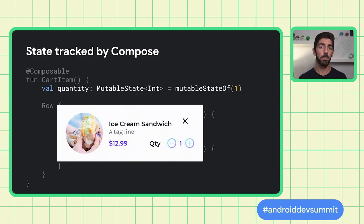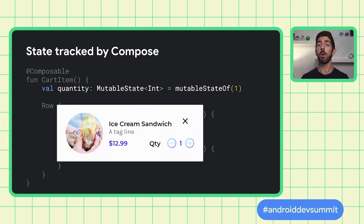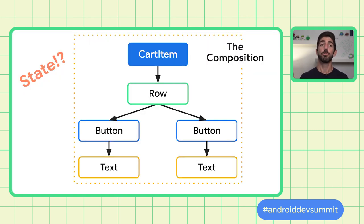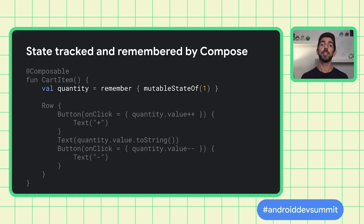Use Compose's State and MutableState types to make state observable. Compose will keep track of composables that read state value properties and trigger recompositions when its value changes. You can use the mutableStateOf function to create a mutable state, taking an initial value that can be mutated. Here we use the value property to read and write the quantity state. But even if it's tracked by Compose and recompositions are triggered, the UI doesn't display the state changes, because quantity is always initialized to 1 on recomposition.